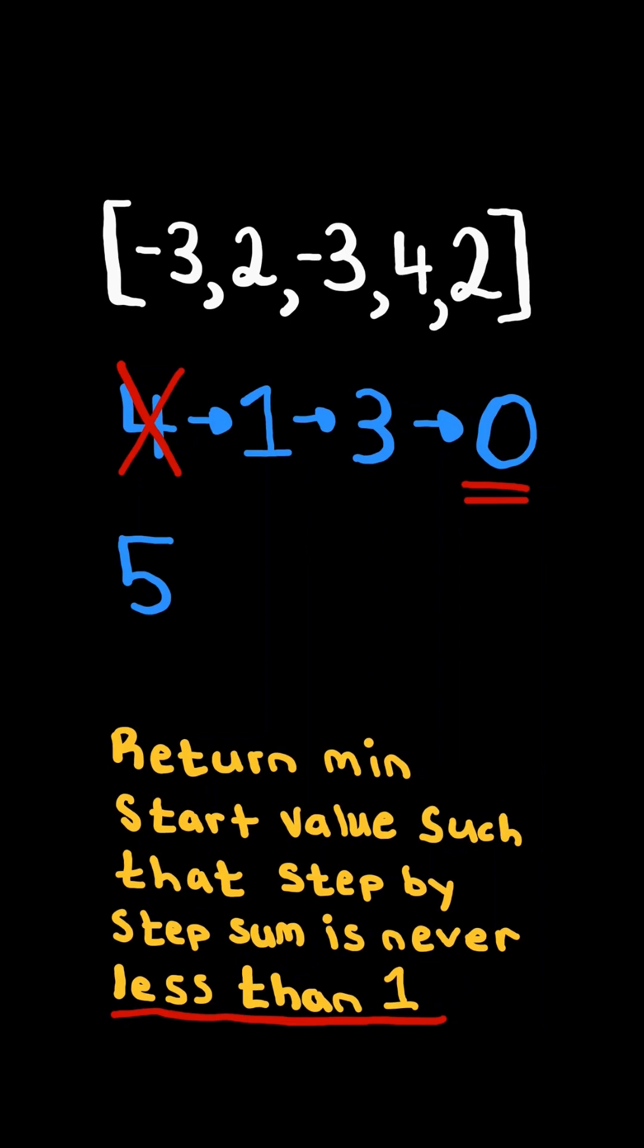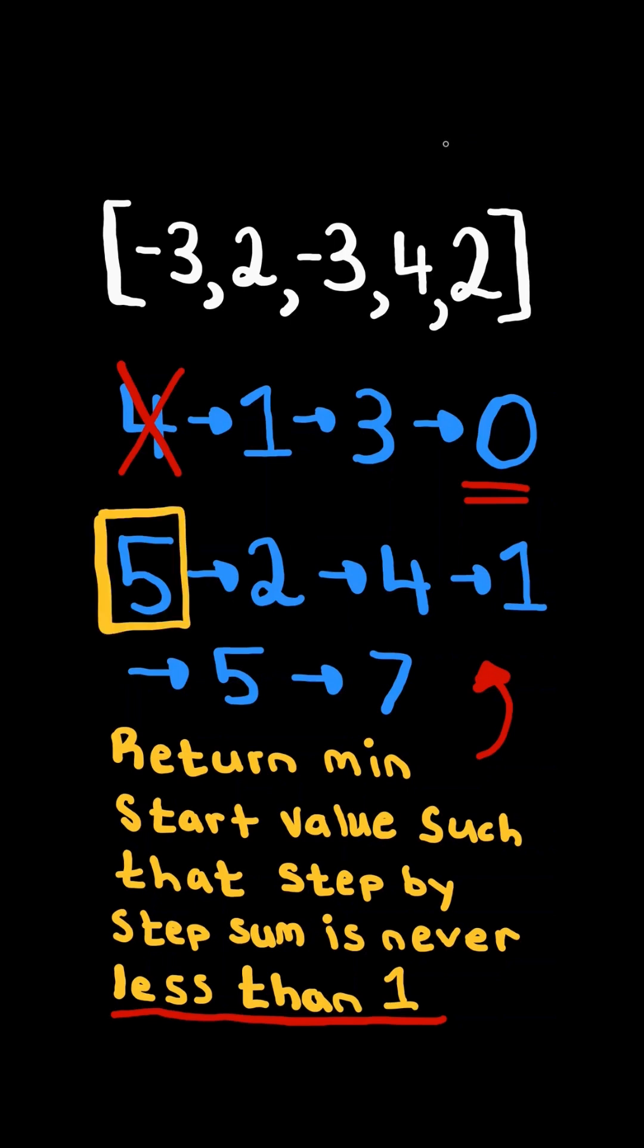Assume we started with 5, we subtract 3 to get 2, and so on. Notice none of these values are below 1. In fact, 5 was the minimum value to achieve this.